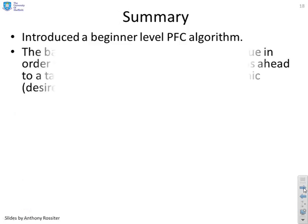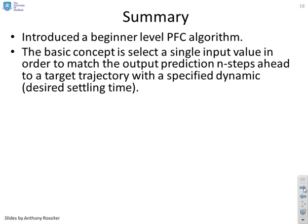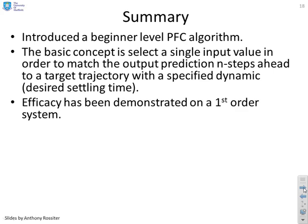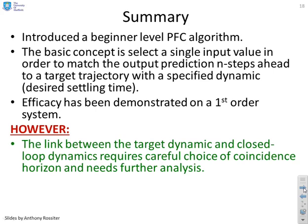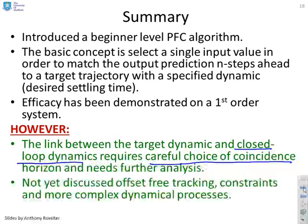So in summary, we've introduced a beginner level PFC algorithm. The basic concept is to select a single input value in order to match the output prediction n steps ahead to a target trajectory with a specified dynamic or settling time. The efficacy has been demonstrated on a first order system. However, the link between the target dynamic and the closed loop dynamics that actually result requires a careful choice of coincidence horizon. If you get the coincidence horizon wrong, it doesn't seem to work very well. And we haven't yet discussed how we ensure offset free tracking and constraints, and we'll do that later.